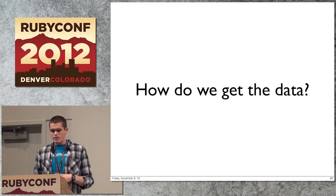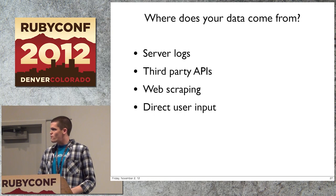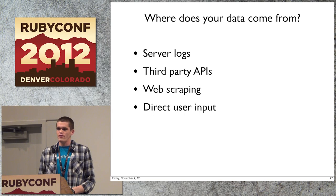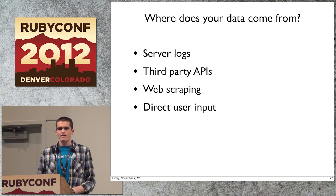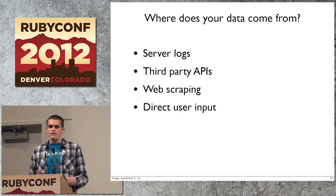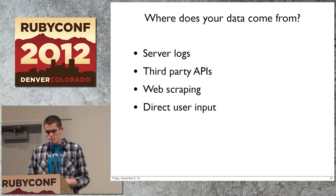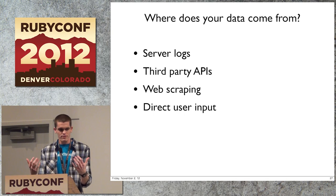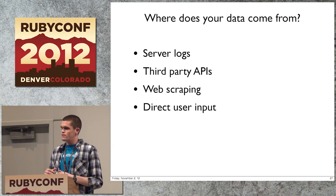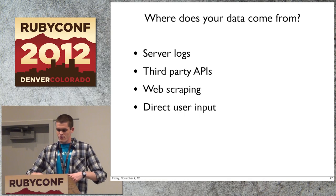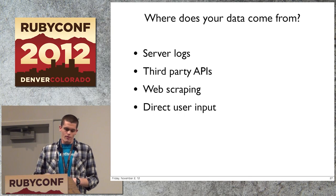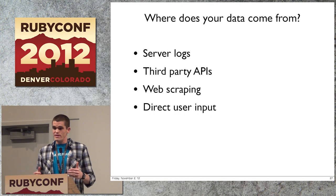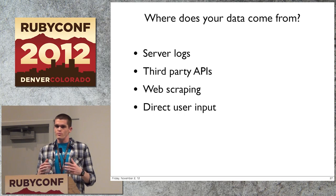Where does data come from? In the social web, most data comes from four sources: server logs from your front-end, Rails, and Nginx boxes; third-party APIs like Twitter and Facebook; web scraping when there's no API; and direct user input like questionnaires or surveys. The important thing is all four sources require programming skills — none of this data is conveniently handed to you. It could even be worse if someone gives you a PDF. Ultimately, you'll need to pull data from all of these sources just to start building a real product.